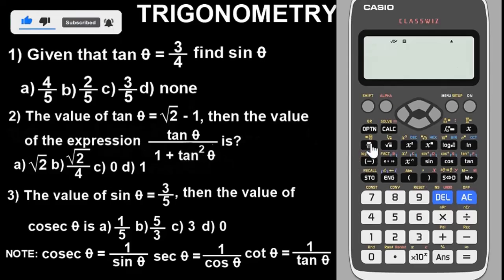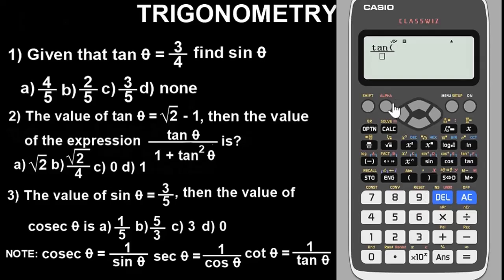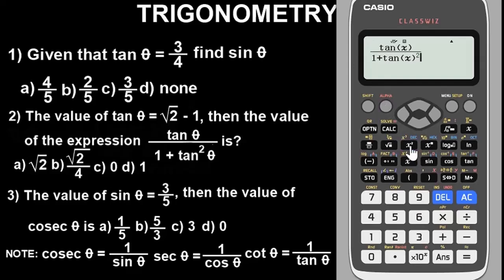Now we have to evaluate the expression. We have tan theta — replace theta with X, so press Alpha X and close the bracket, then divide by 1 plus tan squared theta. An important note: tan squared theta means tan theta times tan theta. A shortcut on this calculator: press Tan, then Alpha X, close the bracket, then square it. This tan(X) in bracket squared is equivalent to tan squared theta. Press equals and get the result: 0.35.